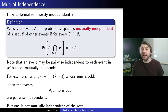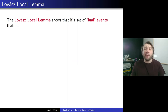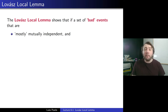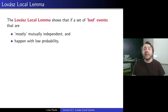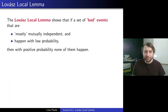So this idea of mutual independence — that I'm somehow independent of any subset, no matter what happens in that set B, whether events are on or off — the probability remains the same. So now we've formalized 'mostly independent' using mutual independence, and we can state the Lovász Local Lemma. Here's the informal version: the Lovász Local Lemma shows that if a set of bad events that are mostly mutually independent happen with low probability, then with positive probability none of them happen. When you apply the LLL, you think of these events as bad events you'd like to avoid, and with positive probability none of them happen.